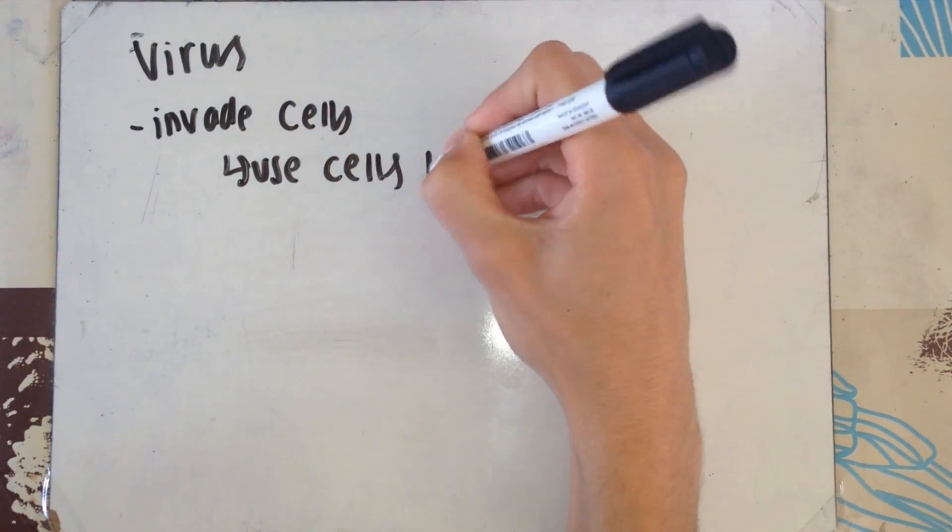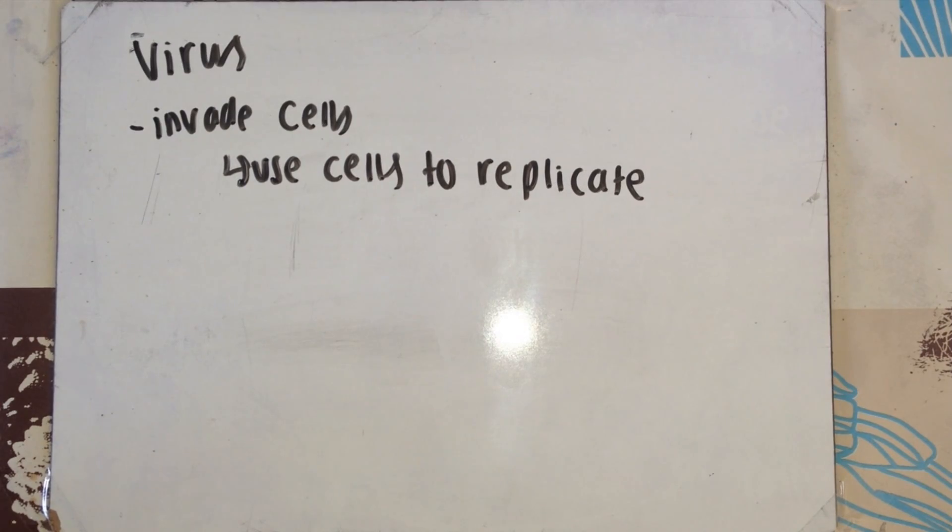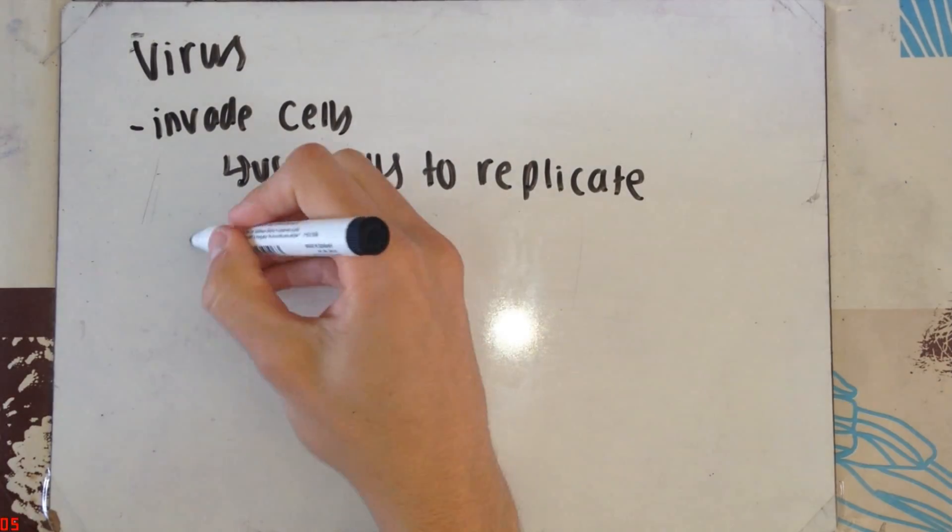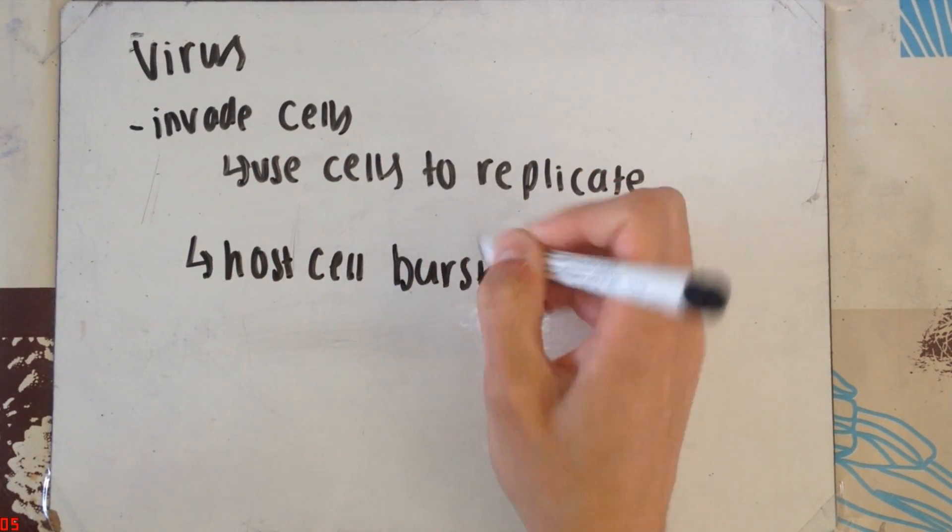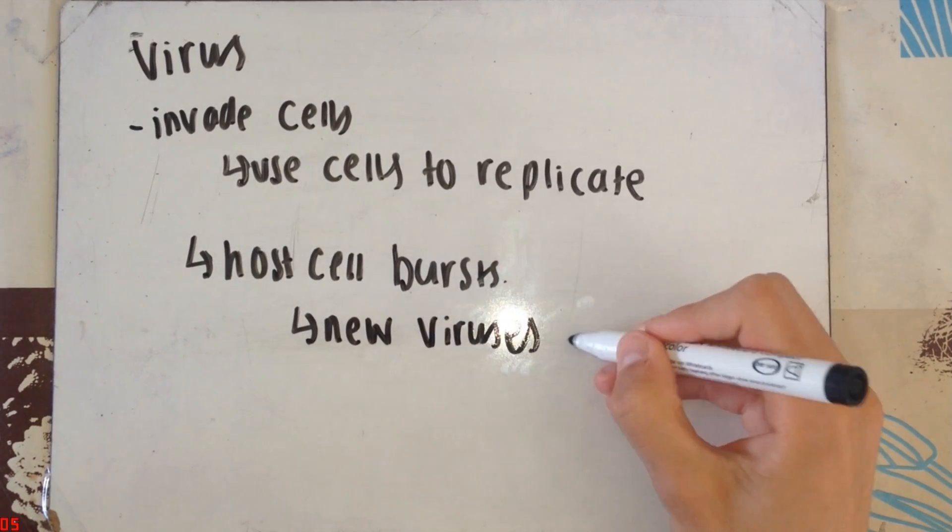Next, we have viruses. Viruses invade the cells. They use the cells' genetic machinery to replicate. They then produce so many of themselves, they burst the cell open and many more viruses emerge.